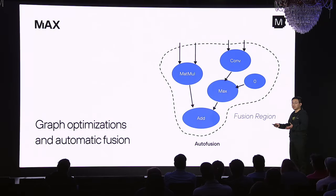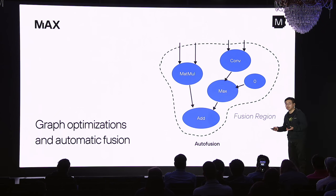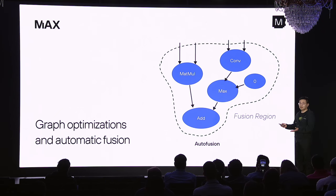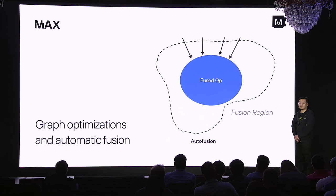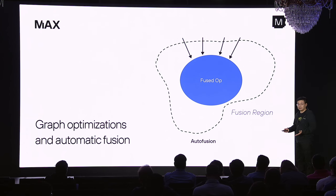About the Max compiler — the last talk already gave an amazing introduction to the compiler, so here's just a short recap. We could have a graph of complex kernels, and the Max compiler is able to fuse them into a single op automatically. This will drastically improve cache locality, reduce memory traffic, and improve performance.